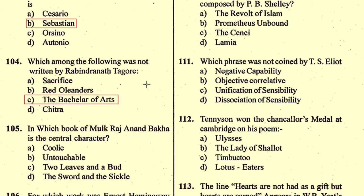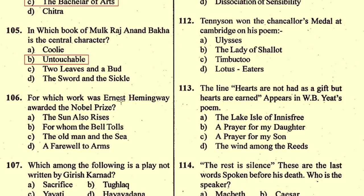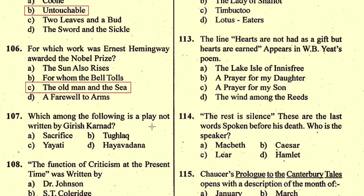Question number 105: In which book of Mulk Raj Anand is Bakha the central character? The right option is B, 'Untouchable'. Question number 106: For which work was Ernest Hemingway awarded the Nobel Prize? He was awarded the Nobel Prize for his novel 'The Old Man and the Sea' in 1954. The right option is C.